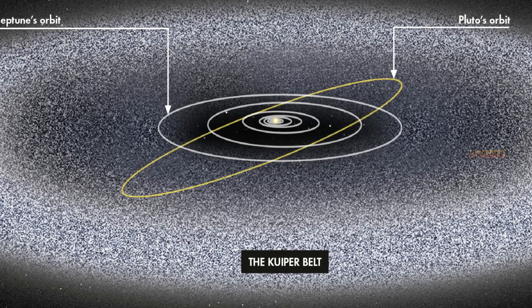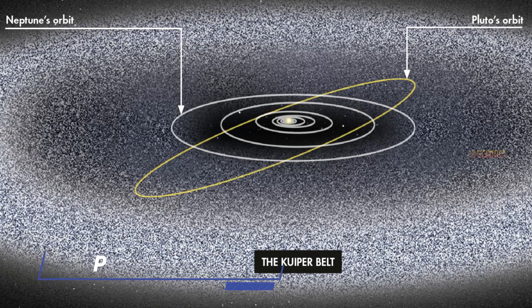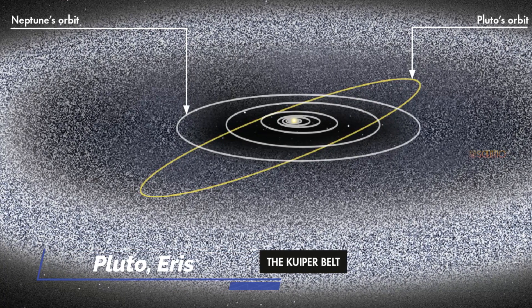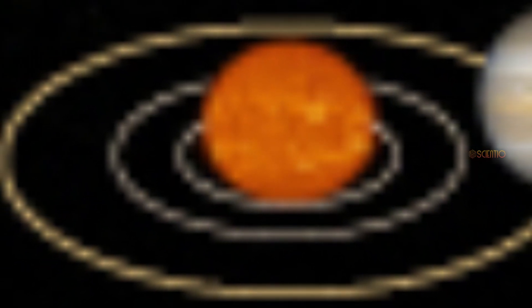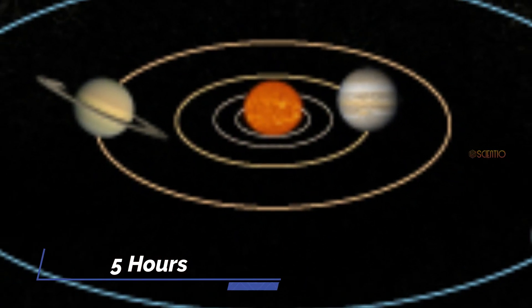If we were to continue our journey beyond the Kuiper belt, we would pass by dwarf planets such as Pluto and Eris. It would take us approximately 5.5 hours to reach Pluto, the largest object in the Kuiper belt.